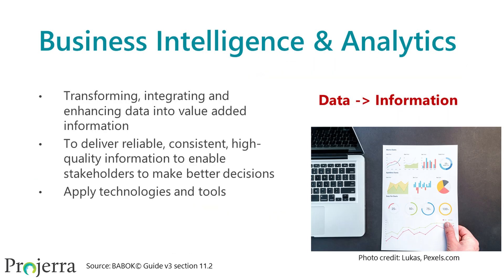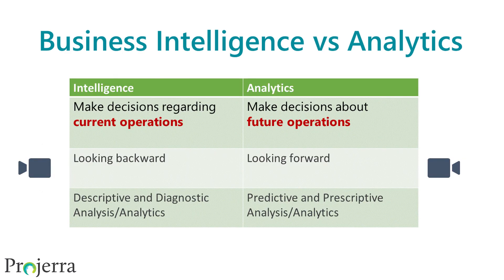Business intelligence and analytics are both about transforming data into information. The primary difference between intelligence and analytics is what they do with that information — what decisions they are enabling. Business intelligence is about enabling decisions on current operations, while business analytics is about facilitating decisions for future operations. Specifically, intelligence covers descriptive and diagnostic analytics, while business analytics covers predictive and prescriptive analytics.